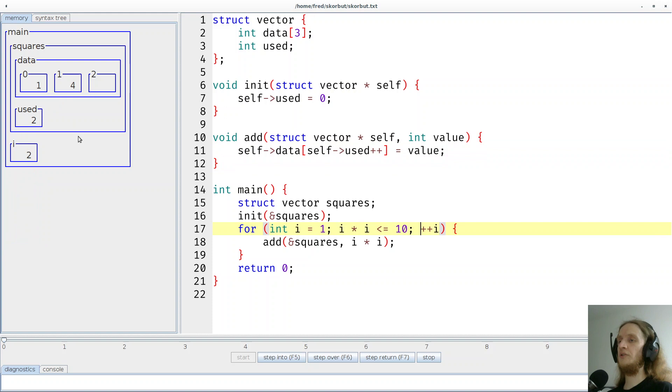Let's do it a third time. So we call it again. What do we want to do? Value nine should be stored at index two, which is here. So we expect a nine over here. And then used will be incremented from two to three. There we go.